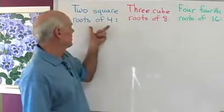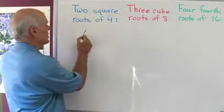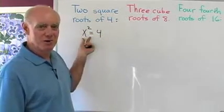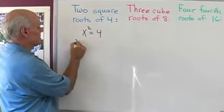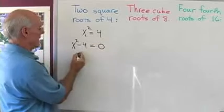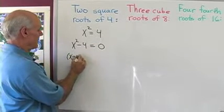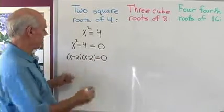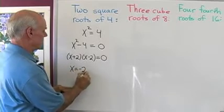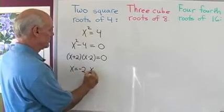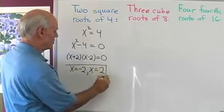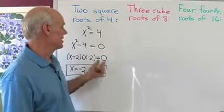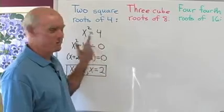Let's find the two square roots of 4 by solving the equation x squared equals 4. Putting it in standard form and factoring the left side, then setting each factor equal to 0, I get x equals negative 2 and x equals 2. These are the two real numbers I can square and get 4.